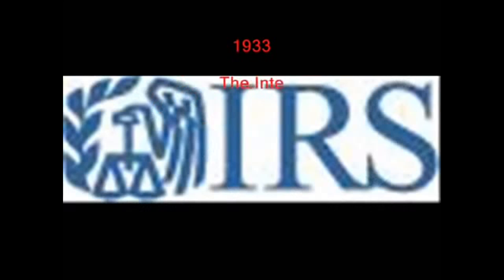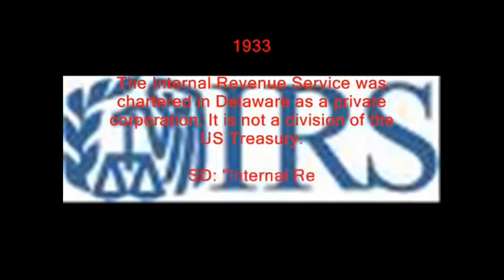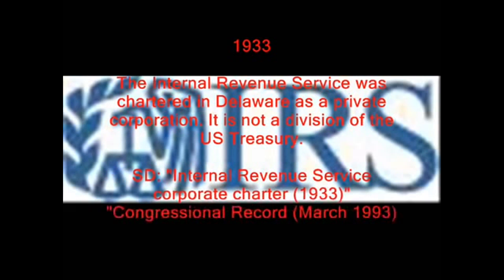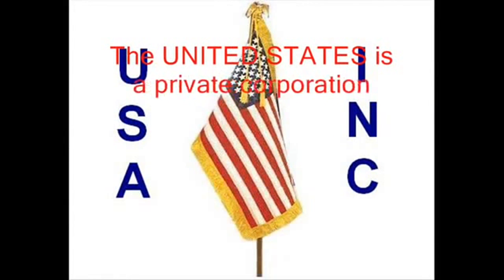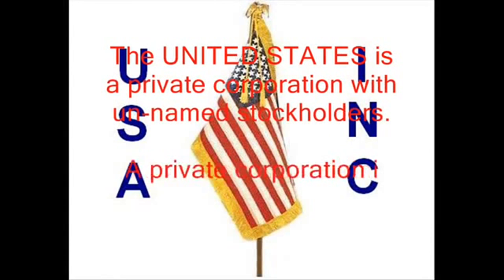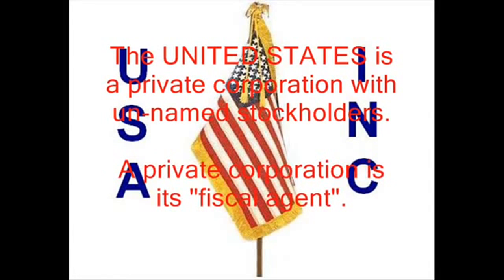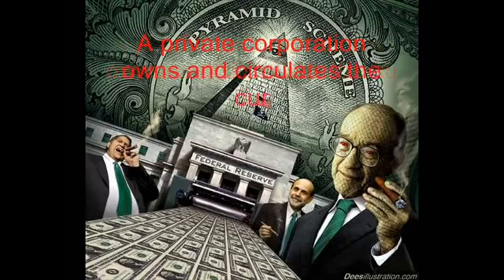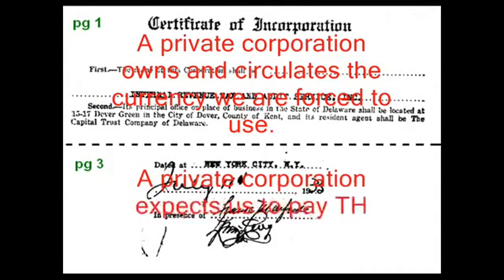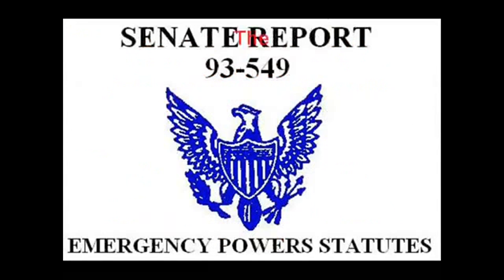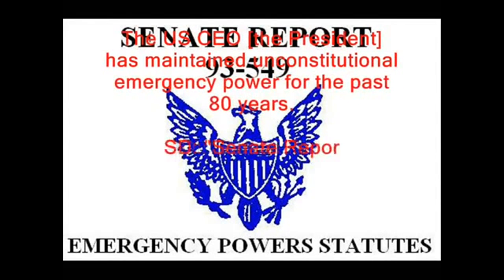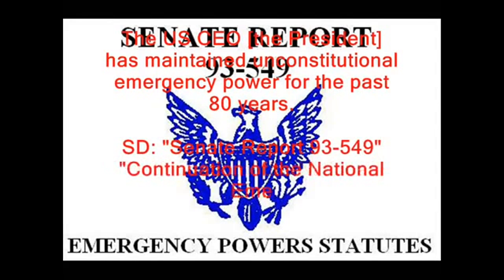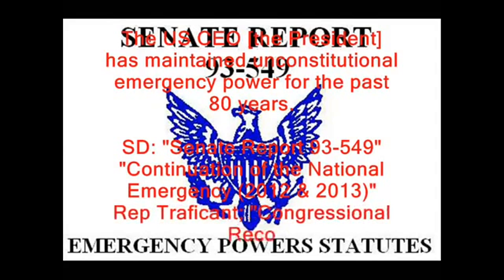1933: The Internal Revenue Service was chartered in Delaware as a private corporation. It is not a division of the U.S. Treasury. Source: Internal Revenue Service Corporate Charter, 1933. The United States is a private corporation with unnamed stockholders. A private corporation is its fiscal agent. A private corporation owns and circulates the currency we are forced to use. A private corporation expects us to pay them taxes. The U.S. CEO — the President — has maintained unconstitutional emergency powers for the past 80 years. Source: Senate Report 93-549, and Continuation of the National Emergency, 2012–2013.